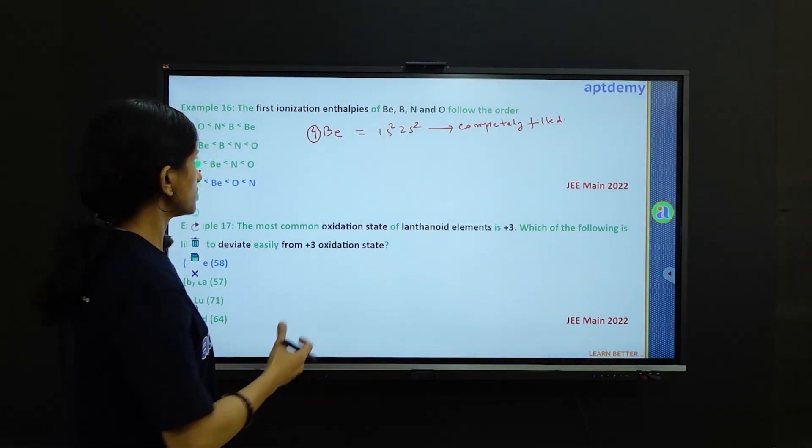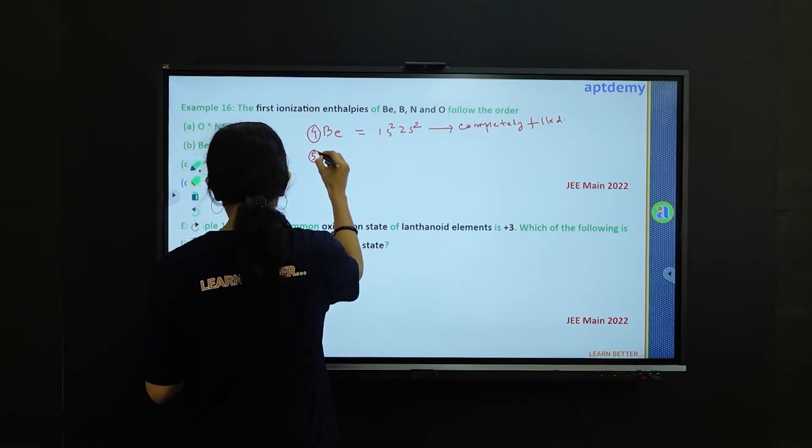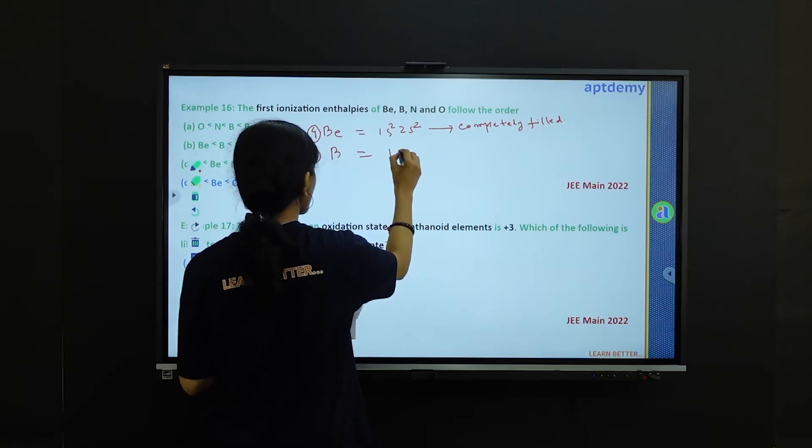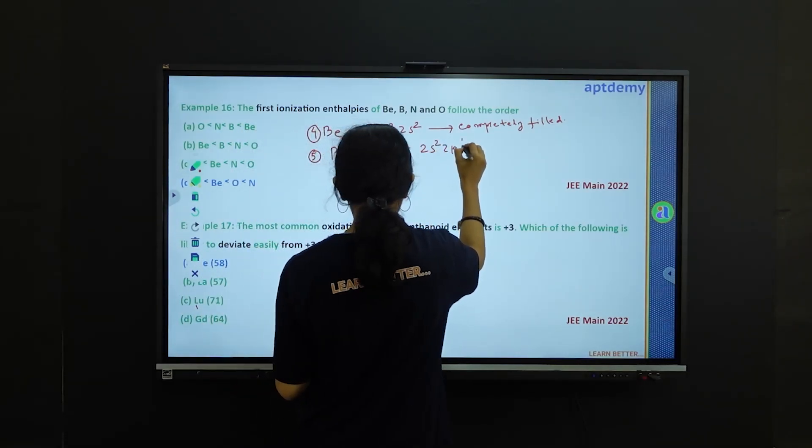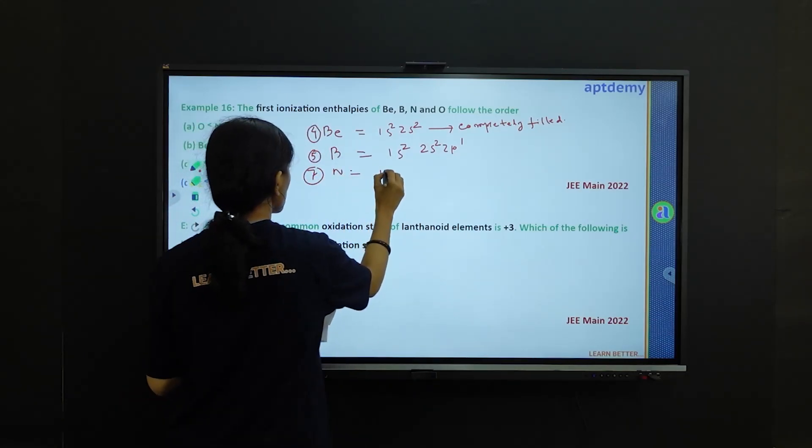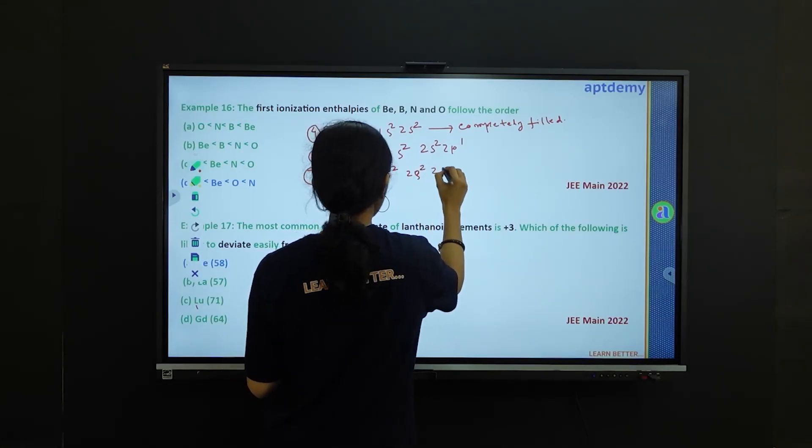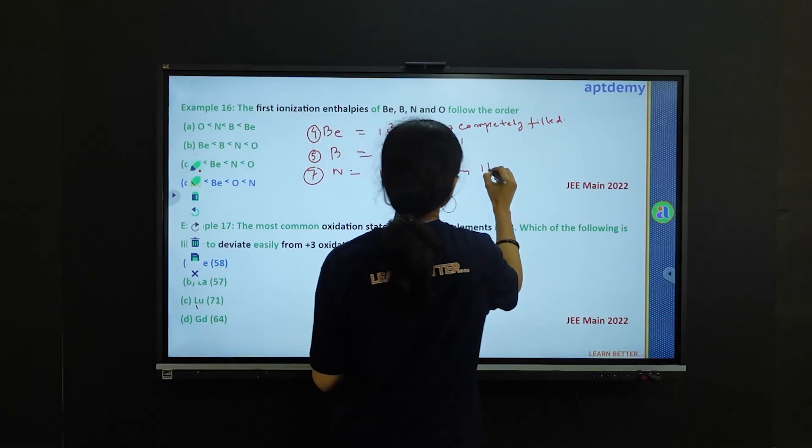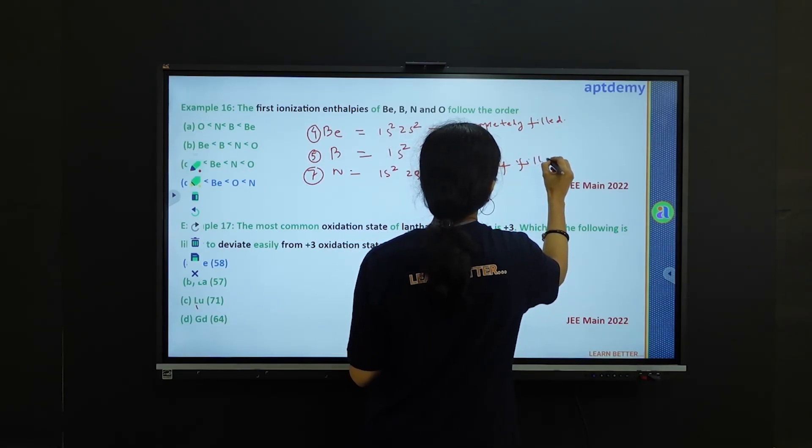5 is for boron, atomic number. Electronic configuration would be 1s2 2s2 2p1. 7 is for nitrogen, electronic configuration is 1s2 2s2 2p3. Again it is a half filled electronic configuration, half filled state electronic configuration.